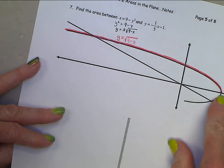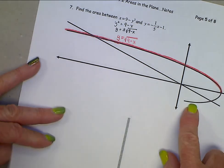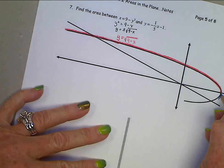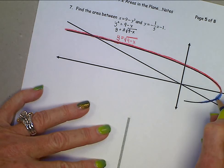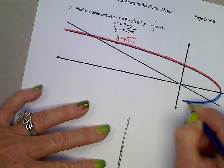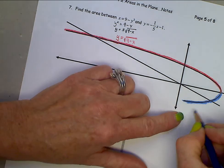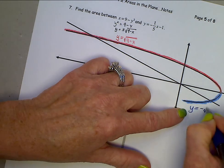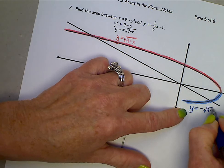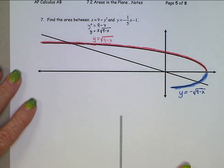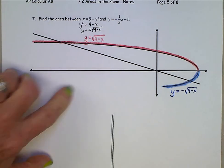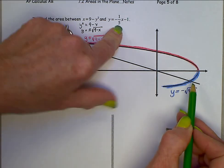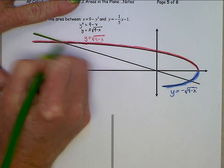That red piece is y equals the positive square root of 9 minus x. The bottom blue piece is y equals the negative square root of 9 minus x. Clearly this linear piece then right here is y equals negative one-fifth x minus 1. I'm going to put that in green.